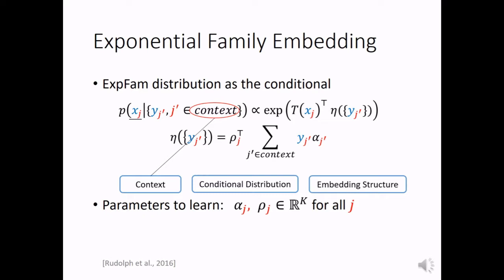The second ingredient is the conditional distribution. We need to choose one distribution from the exponential family. The third one is the embedding structure. It means when one item appears somewhere in the data, it always uses the same vector as its representation. Essentially, it is the definition of the indices of these vectors. The parameters to learn for this model are these vectors for all items.